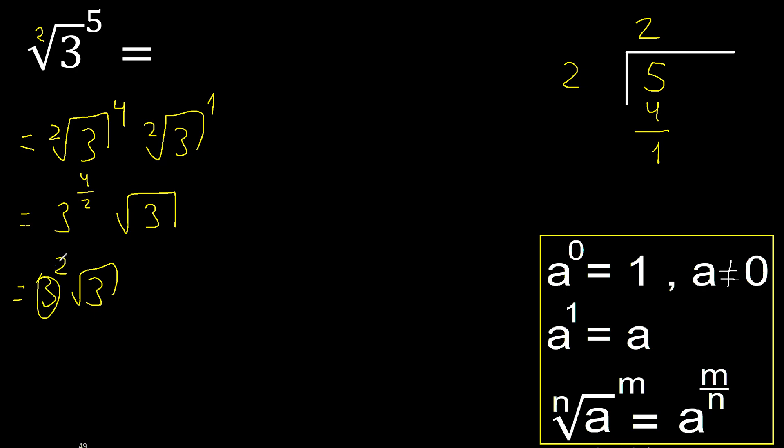3 multiplied 2 times: 3 multiplied by 3 is 9. Finish.